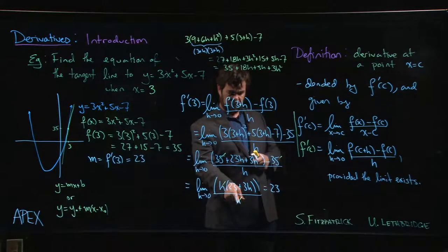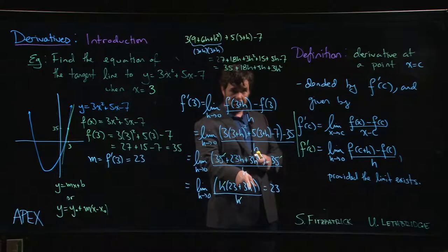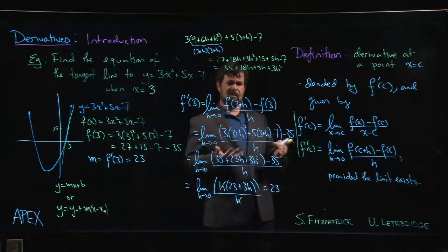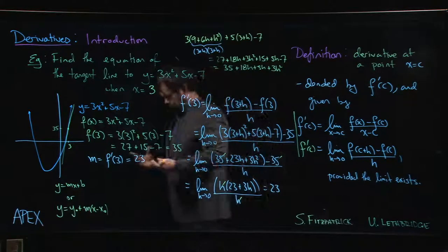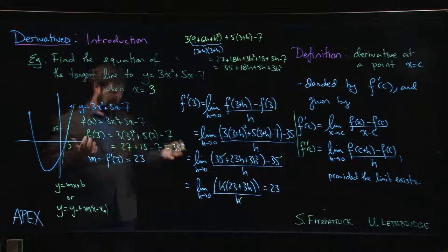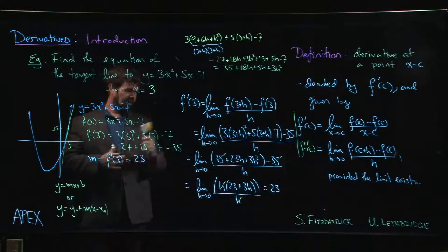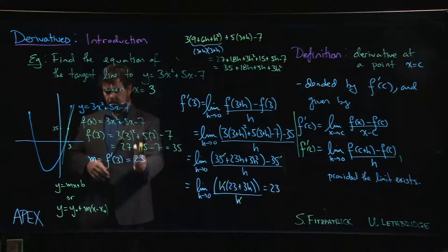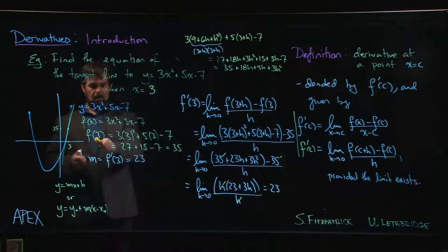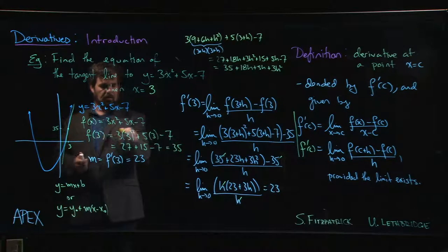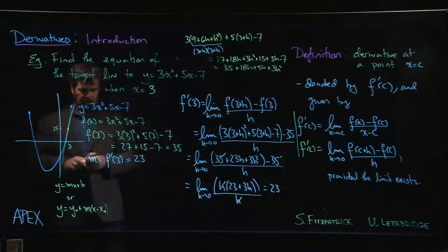Really? How can it be zero and not zero at the same time? Well, we understand this now through the machinery of limits. We can make sense of this. We get our answer. We've got our slope, we've got our point, right? x naught is 3, y naught is 35.